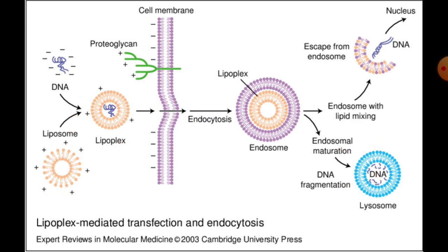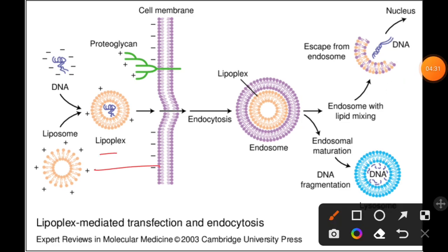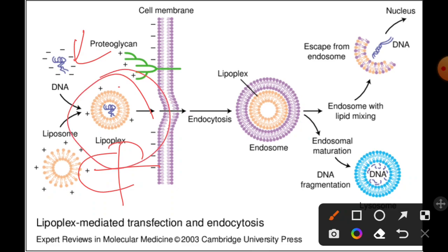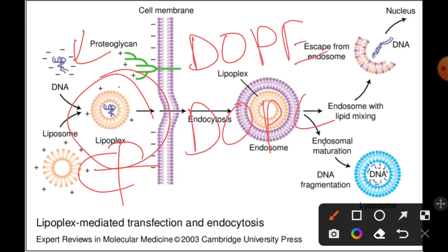In some cases, along with the cationic liposome, a neutral liposome is also used. This neutral liposome acts as a helper for the cationic liposome and also as a carrier of DNA, helping to transfer the cationic lipoplex. Two such neutral lipids used are DOPE and DOPC, which improve stability, reduce toxicity in blood serum, and increase transfer efficiency.